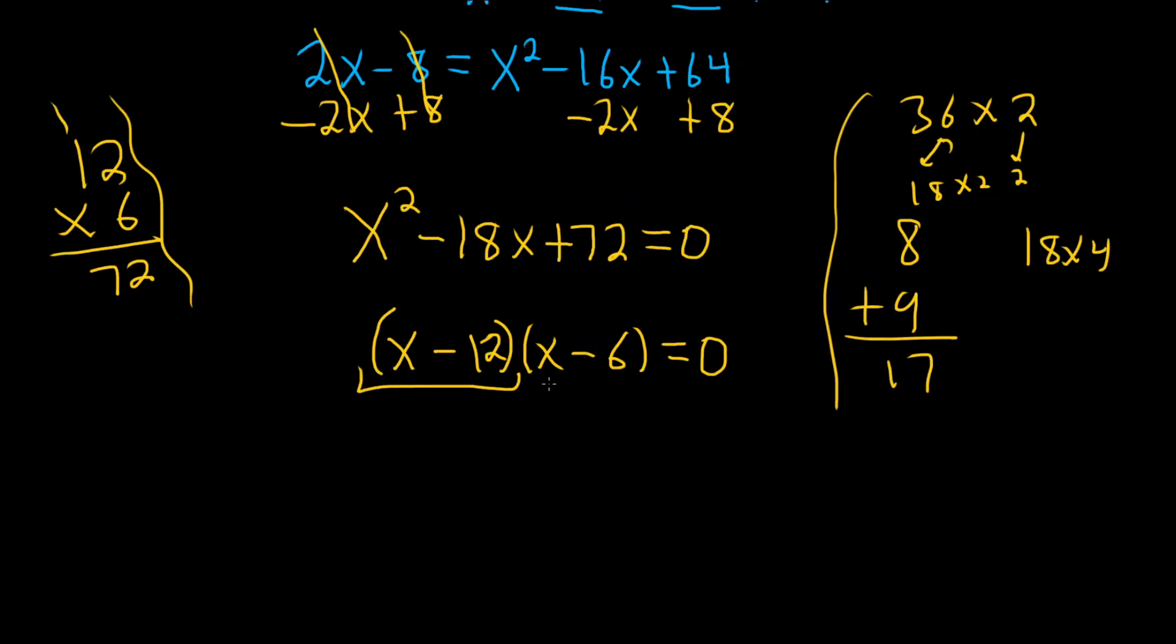You have a product equal to 0. So that means you set each factor equal to 0. So x minus 12 equals 0, and x minus 6 equals 0. So here we get x equals 12, and here we get x equals 6.